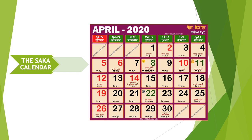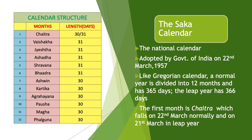Now we move to the next calendar, that is the Saka calendar. The Saka calendar is the calendar based on the Saka era and it is the national calendar which is followed in our country. This calendar was adopted from 22nd March 1957 and the government of India uses the Saka calendar together with the Gregorian calendar for official uses.